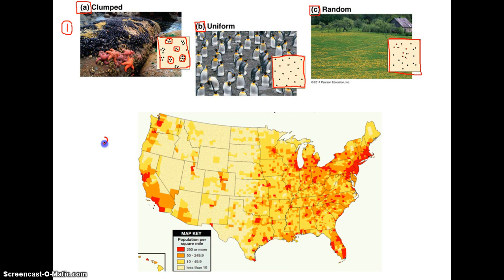This map of the United States represents the second feature we use to describe a population: population density. Density is different from distribution — distribution describes how organisms are spread over the area they inhabit, while density refers to the number of organisms that live in a given area.